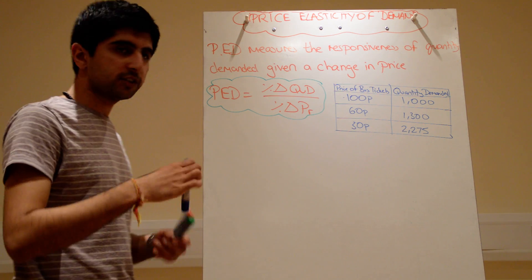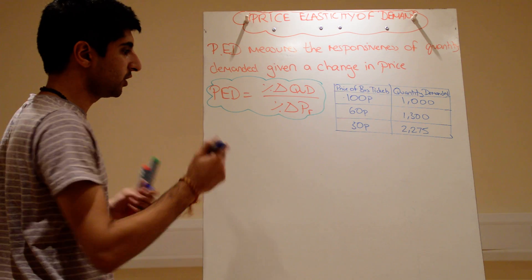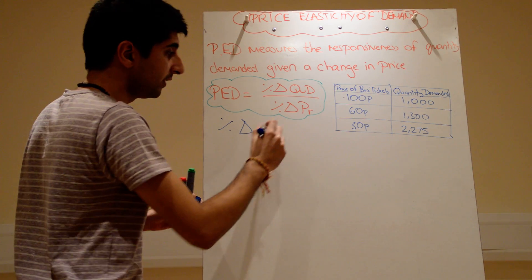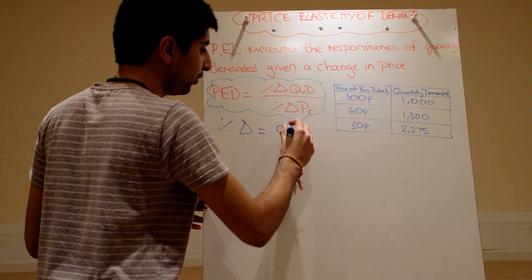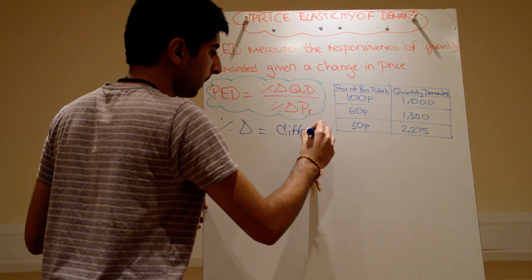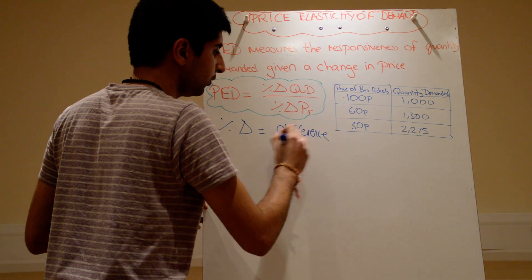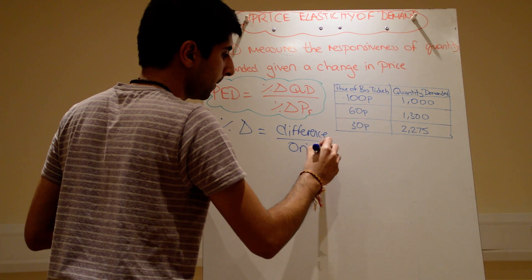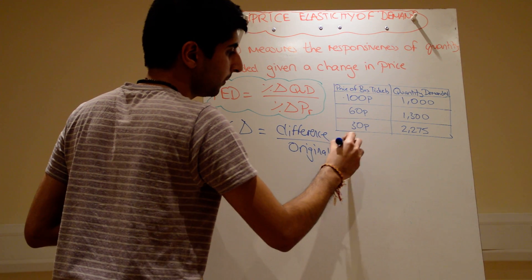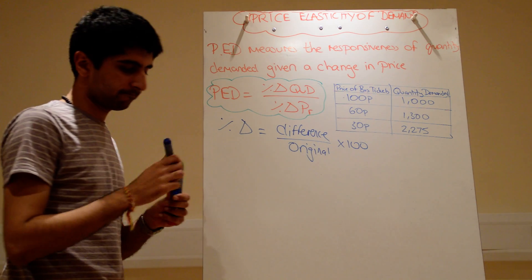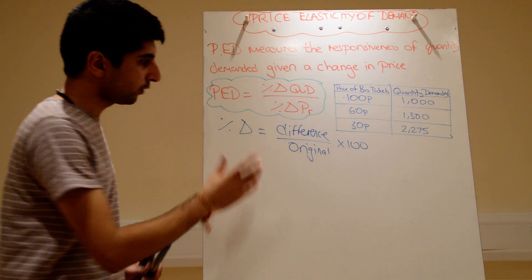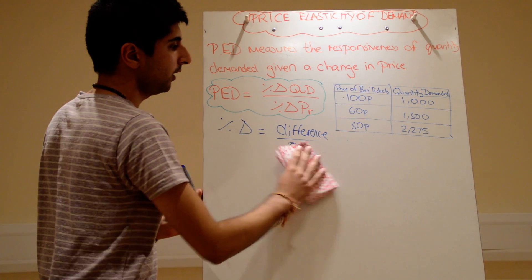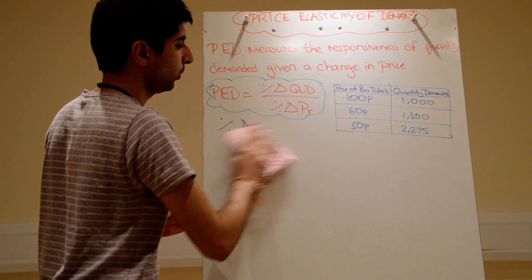What is percentage change? How do we actually work it out? Percentage change is just the difference between two values over the original value, then times that by 100 to get a percent. Write that down if you need to work out percentage changes — that's how you work it out.